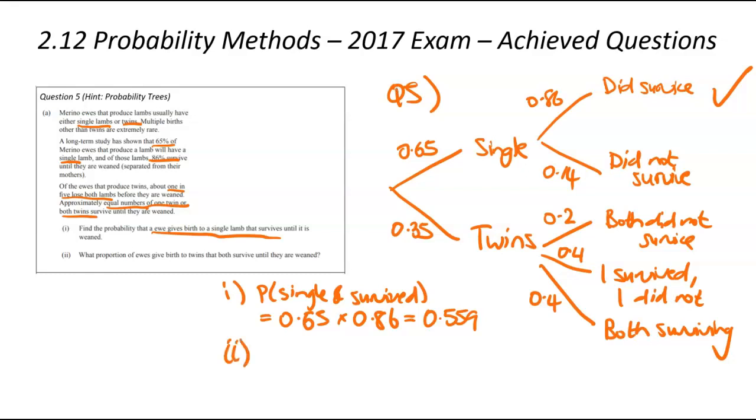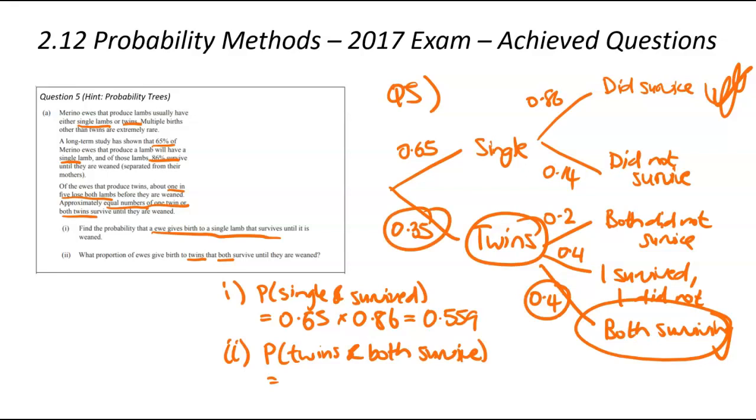Let's have a look at ii now. What proportion of ewes give birth to twins and they both survive? We're trying to find the probability of twins, and both surviving. We're now going to look at our tree. Which branch relates to twins and both surviving? We're going to multiply 0.35 and 0.4 together. So that's going to be 0.35 times the 0.4. Plug that into your calculator. You're going to get 0.14.